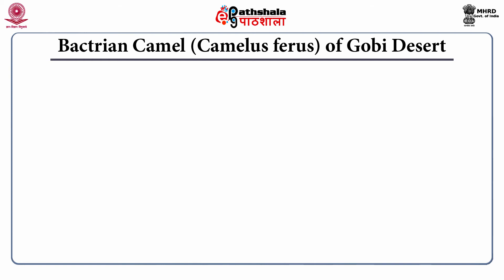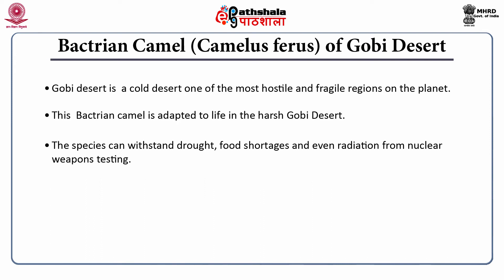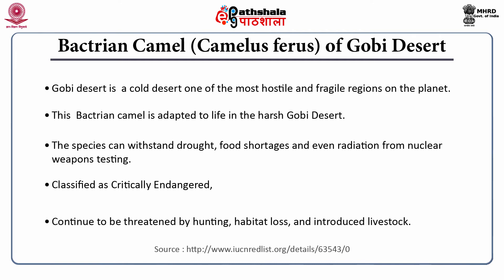The Bactrian camel of the Gobi desert is adapted to life in one of the most hostile and fragile regions of the planet. The species can withstand drought, food shortage and even radiation from nuclear weapons testing. This animal is classified as critically endangered but continues to be threatened by hunting, habitat loss and introduced livestock.